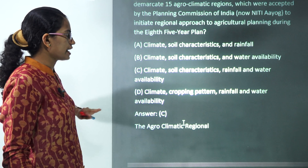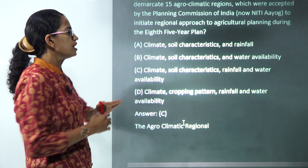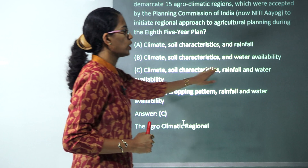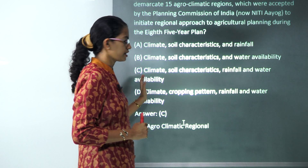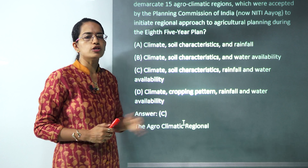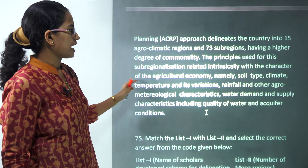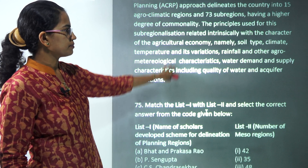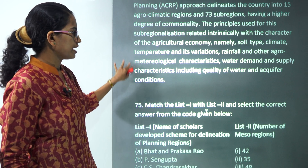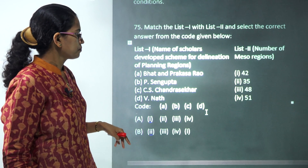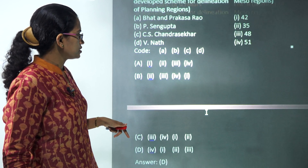The next question asks about the basis for demarcating 15 agro-climatic regions. Climate, soil, rainfall, and water availability are among the bases used, and we have the list of other criteria included here.